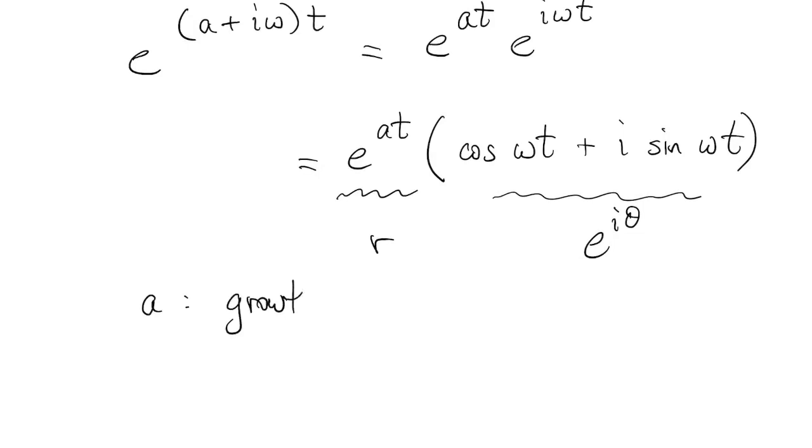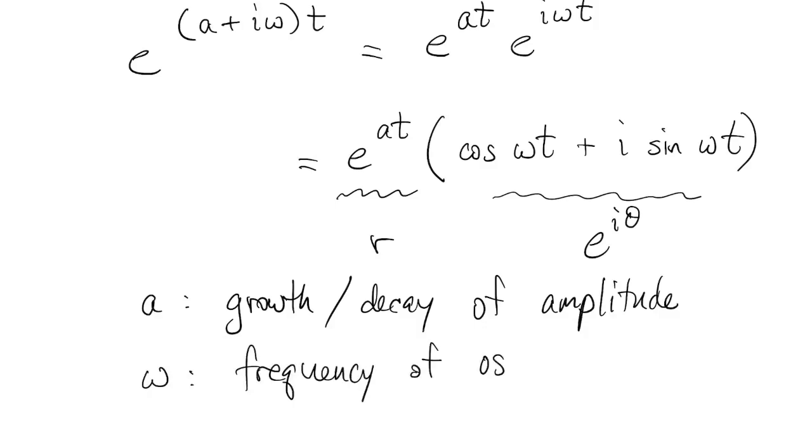Or we could just think of the front as the magnitude, and the second term as the direction or the angle θ. So the real part, a, of the eigenvalue tells you about the growth or the decay of the magnitude or the amplitude. And ω, the imaginary part of λ, tells you about the frequency of oscillation around the unit circle.